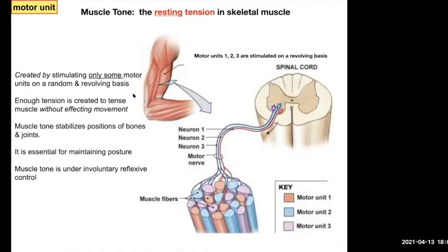Remember we talked about the stability of certain joints, like your shoulder joint. One of the main factors influencing the stability of that very unstable shoulder joint was the muscle tone around it — keeping it secure, keeping that humeral head secure in the glenoid cavity.